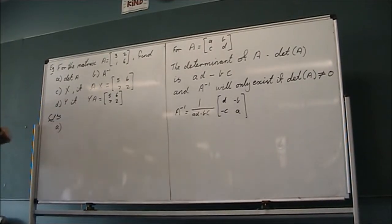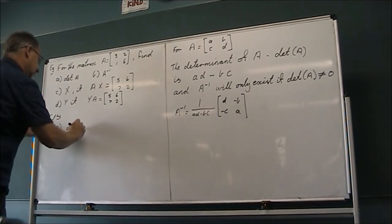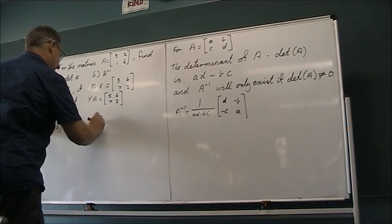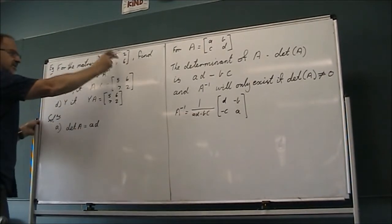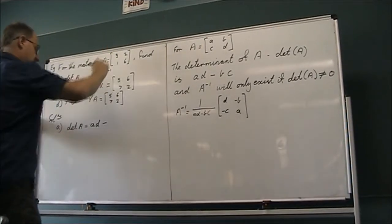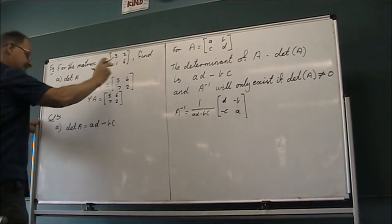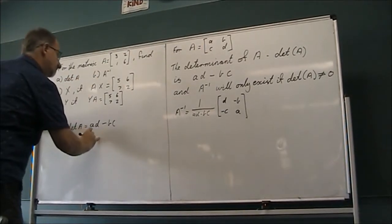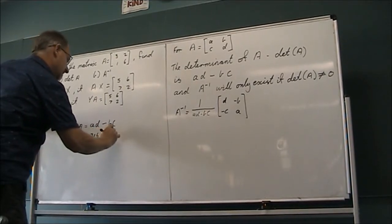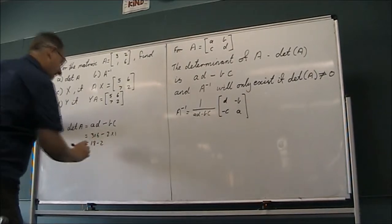So for part A, we're asked for the determinant of A. So the determinant, remember, is AD, multiply these two numbers, called the leading diagonal, minus BC, which is these two numbers. So 3 times 6, minus 2 times 1. So 18 take 2 is 16.